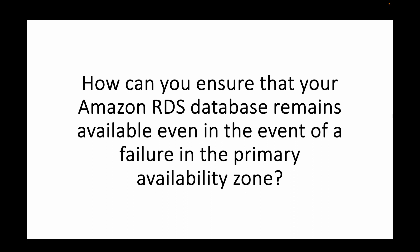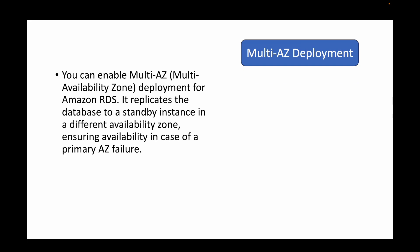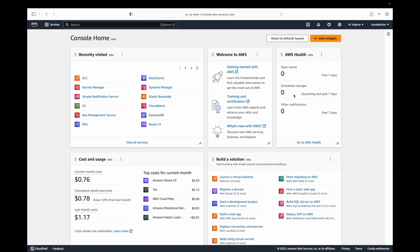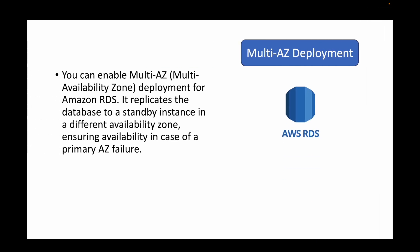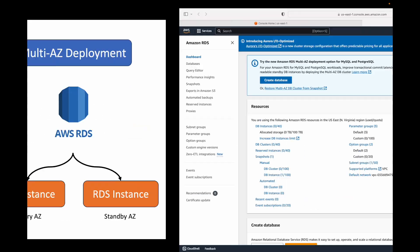The next question is: how can you ensure that your Amazon RDS database remains available even in the event of a failure in the primary availability zone? Here we're talking about making your database highly available. For that, we can enable multi-AZ deployment. When creating a database, we have the option of enabling multi-AZ deployment, where the database is created in two different availability zones.